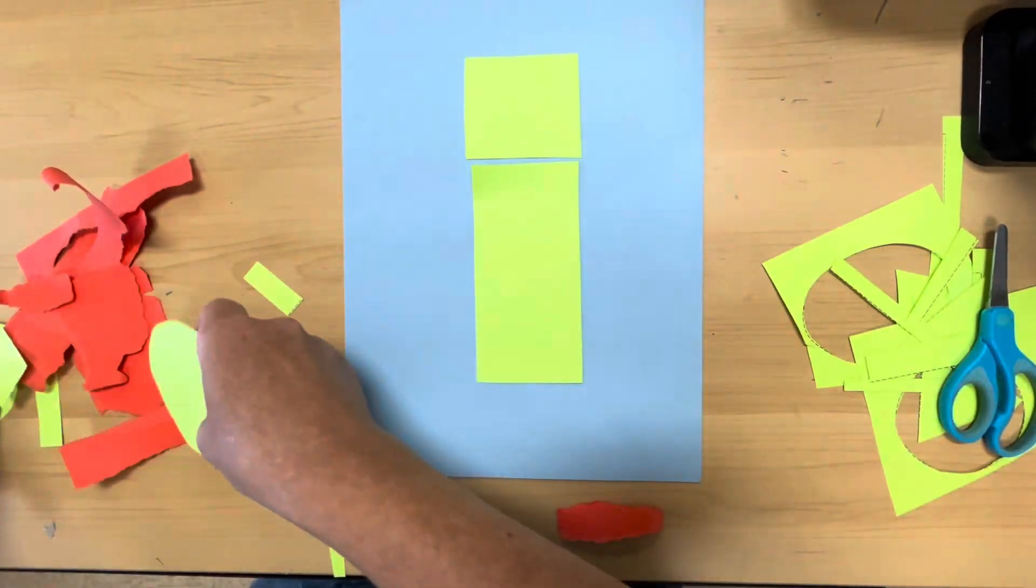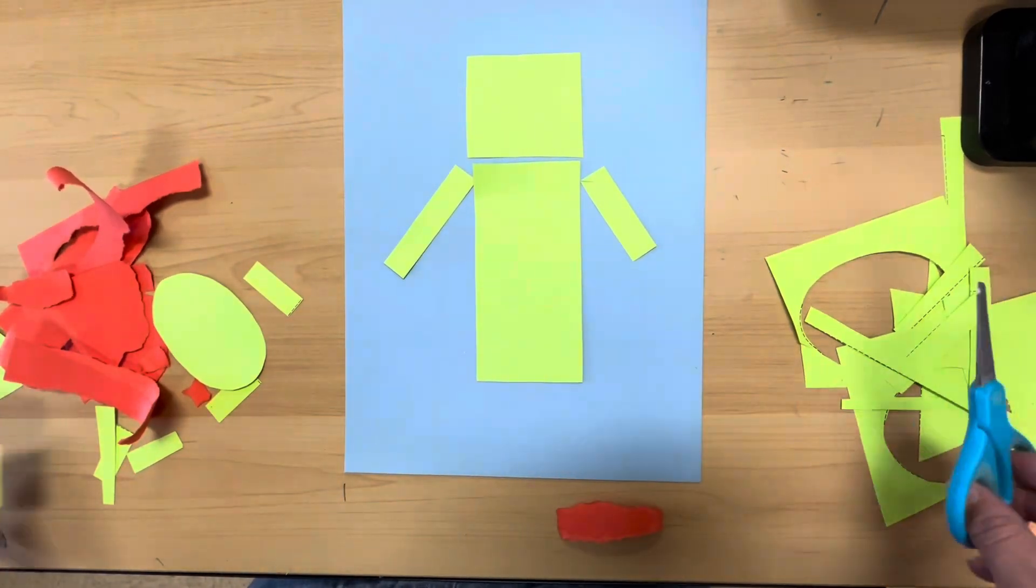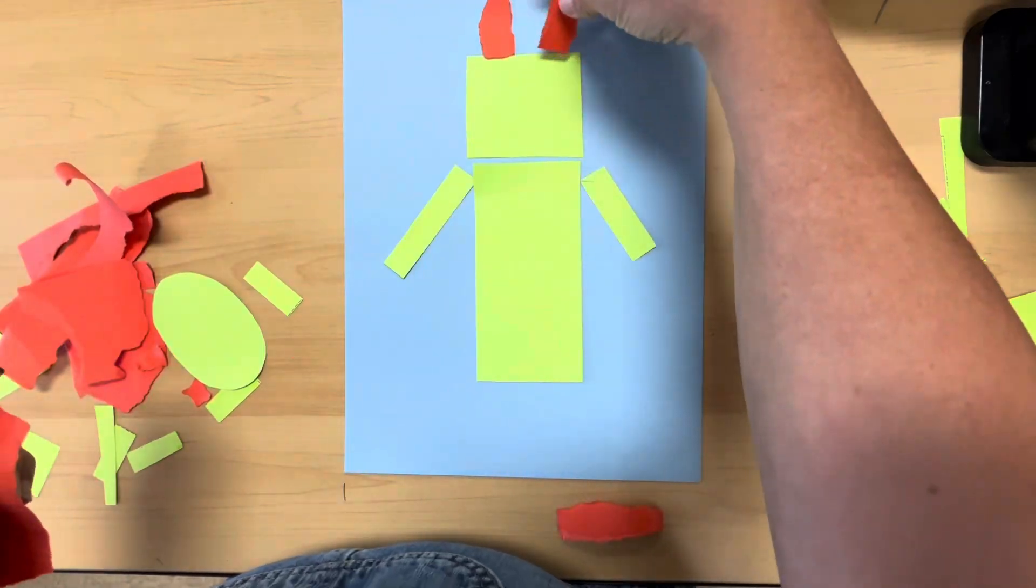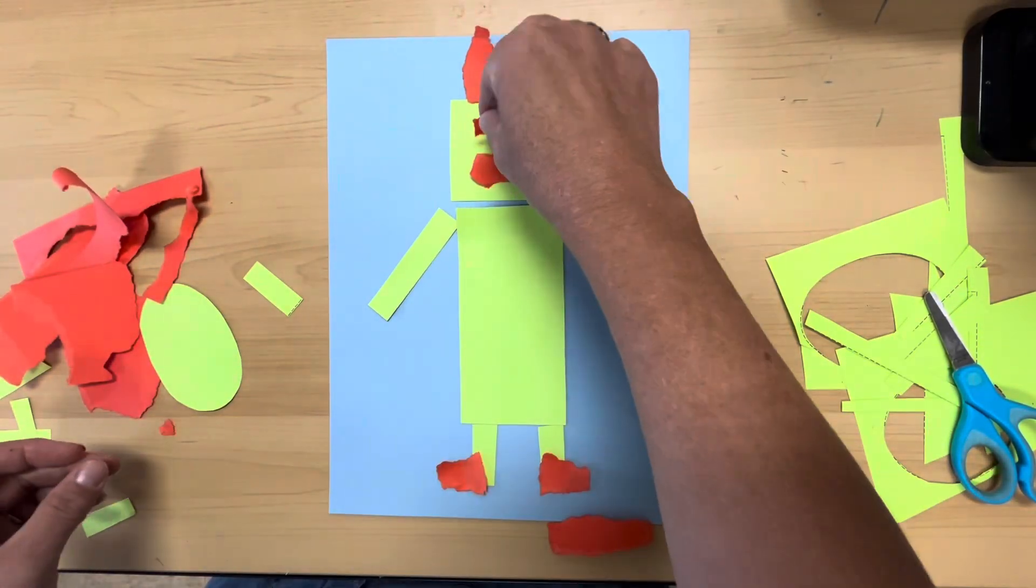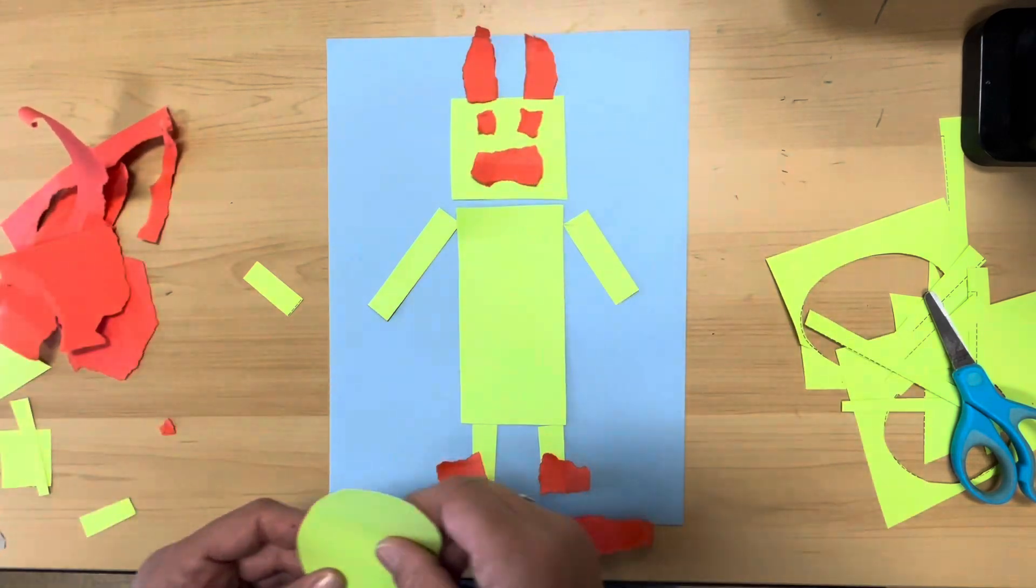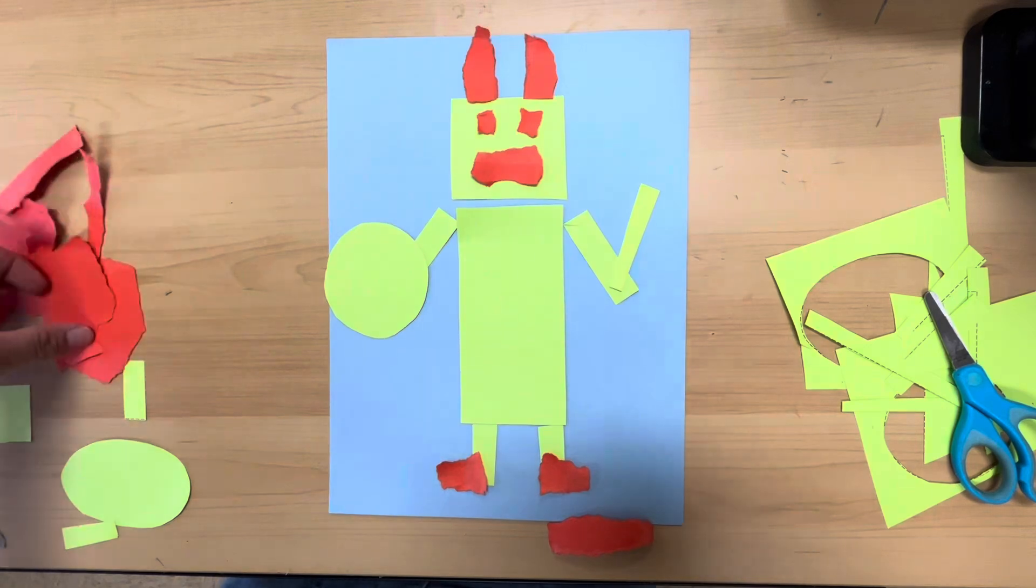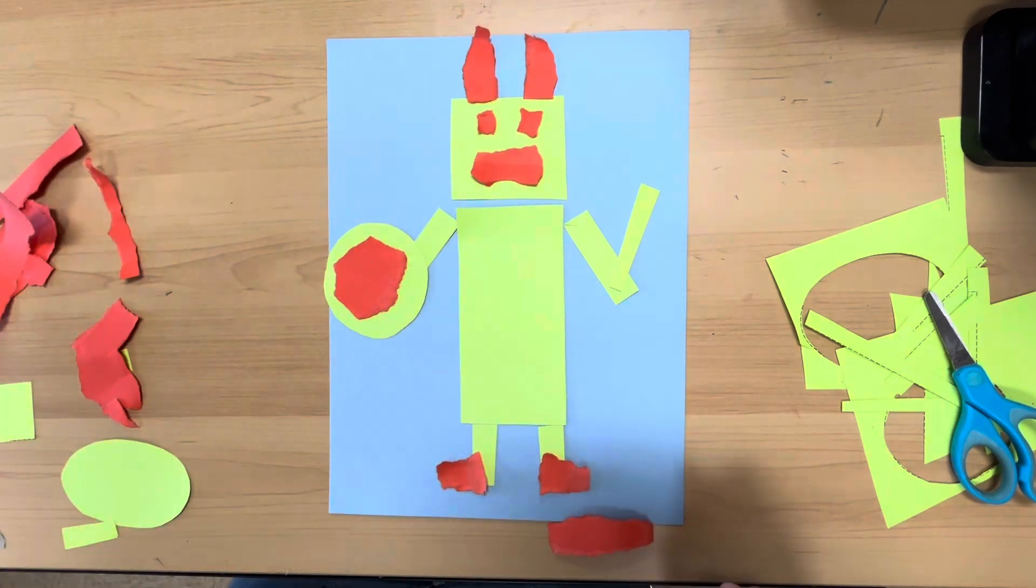One more. I'm using my square for a head, rectangle for a body, and I'm going to make some kind of guy here. Raw. He's pretty cool.